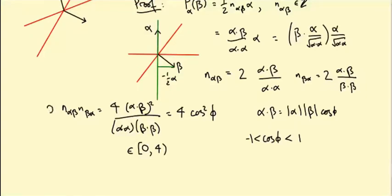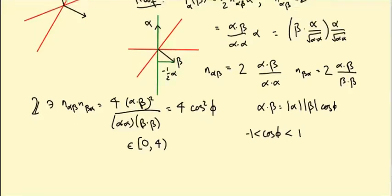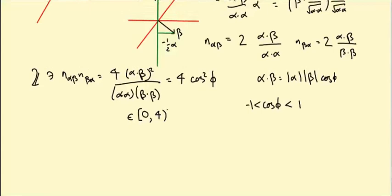And it's also an integer, because it's a product of integers—n_αβ and n_βα are both integers. Their product is an integer.